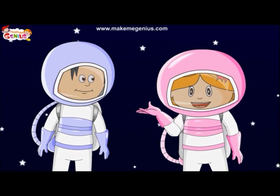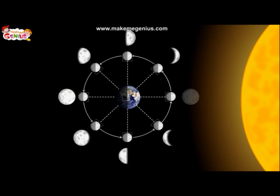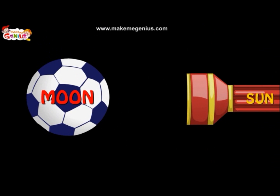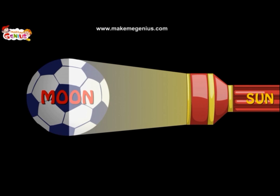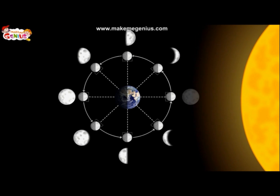That is in fact true, and you are really a genius. The moon shines because it reflects the light from the sun. The part of the moon facing the sun is always lit up and the part facing away from the sun is in darkness. So it is like a torchlight falling on one side of a soccer ball. Yes, you are correct. We can say that the lunar phase is the amount of moon we can see from the earth depending upon how much it is lit up by the sun.